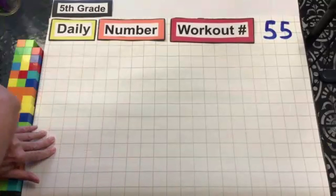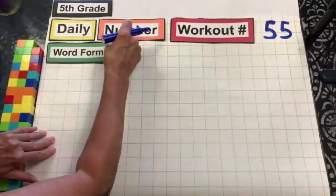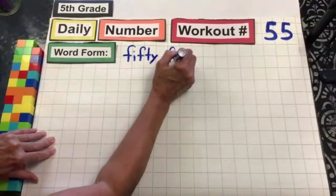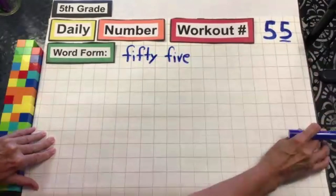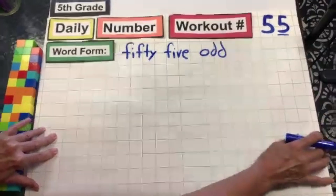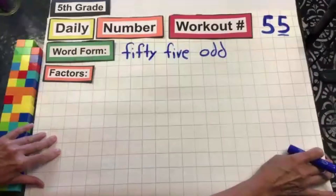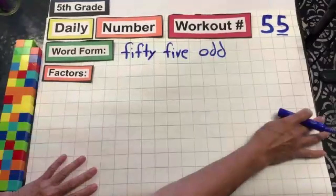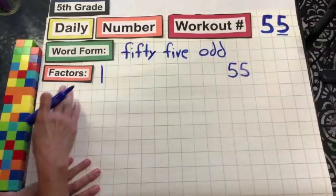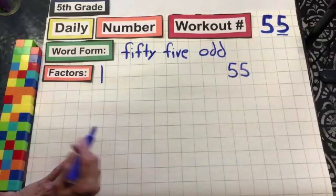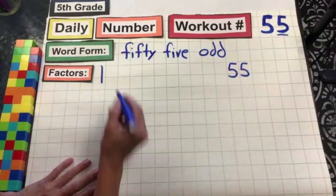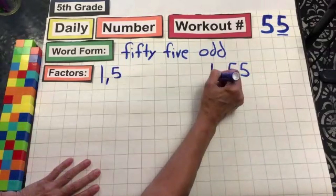There's a five in the ones place value, so we know it is an odd number. Let's move on to factors.